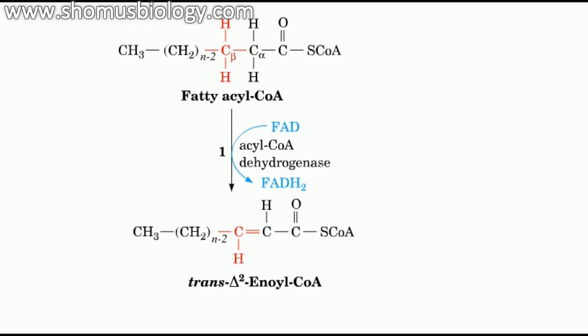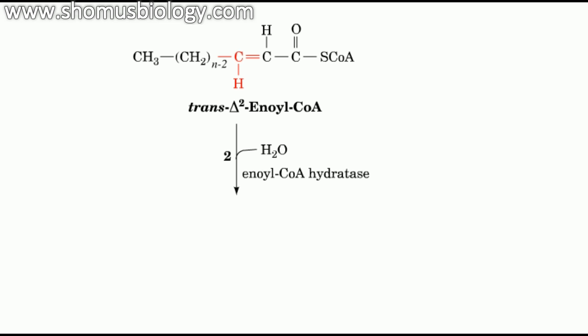The first step in the degradation of fatty acyl-CoA is the formation of a trans-alpha-beta double bond through dehydrogenation by flavin enzyme acyl-CoA dehydrogenase. As a result, it produces FADH2, which will be used later to produce energy.